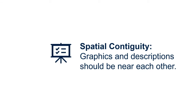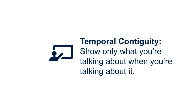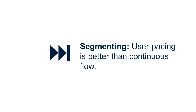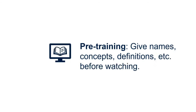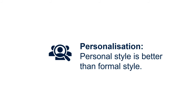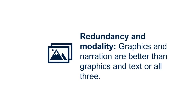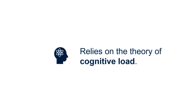Further principles include spatial contiguity — when you have a graphic and its description they should be near each other; temporal contiguity — when you're talking about something, show that thing on screen and don't show other things; segmenting principle — make sure users can pace their own watching rather than a continuous flow; pre-training principle — ensure names, concepts, and definitions are available before people watch; personalization principle — it's better to speak directly to your audience in a more informal style; and the redundancy/modality principle — graphics and narration are better than graphics and text, or having all three simultaneously.